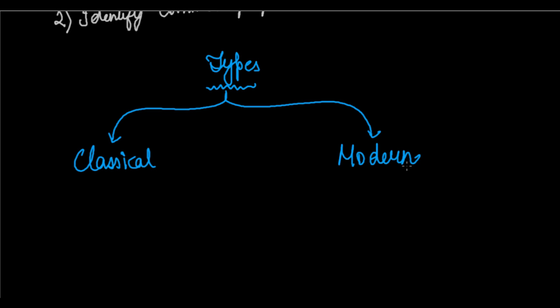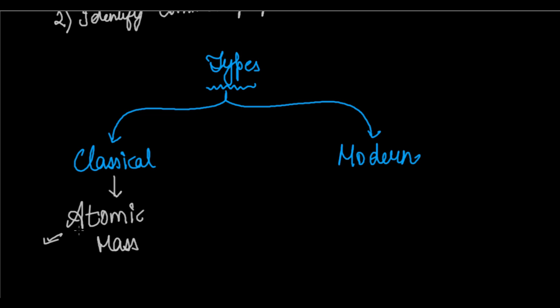The classical method refers to traditional approaches that have been followed for a long period of time. The classical method was based on the concept of atomic mass — elements were arranged and classified on the basis of their atomic mass. The classical concepts revolved around atomic mass as the key factor in classification.